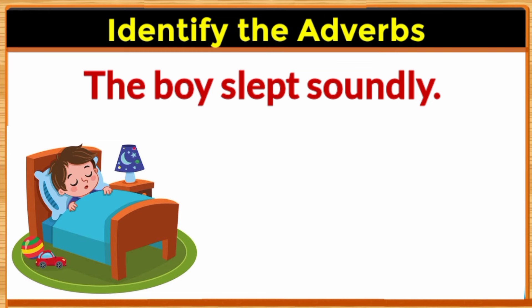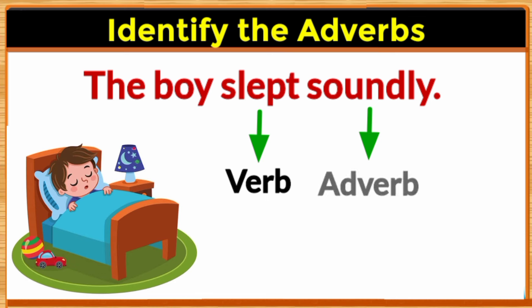The boy slept soundly. Here, slept is the action — it is a verb. The word soundly tells us more about the verb, that is, how the boy slept. He slept soundly, so soundly is the adverb.